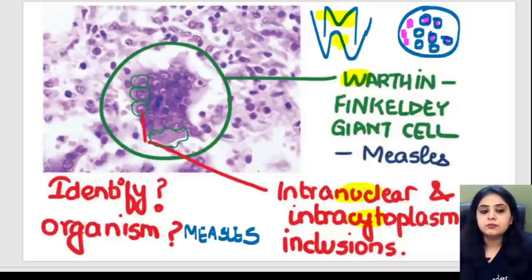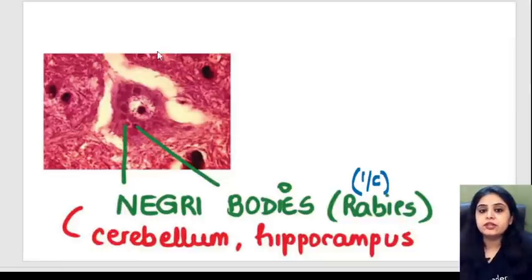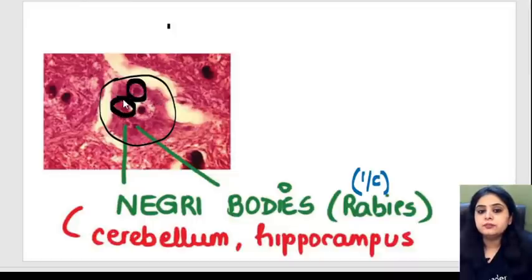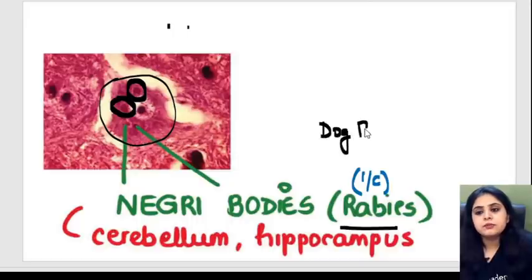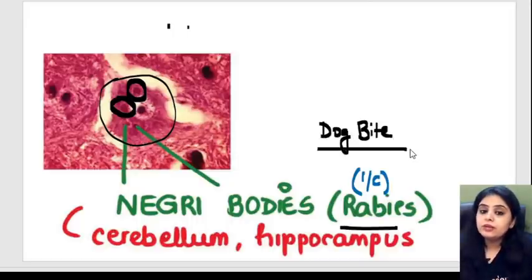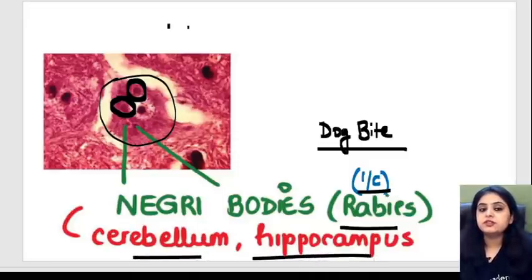Another very commonly asked set are the Negri bodies, which are intracytoplasmic bodies. In the image you can see a large cell, and within the cytoplasm are pink-colored bodies — those are the Negri bodies. They won't come as a spotter; history of a dog bite or animal bite will be given along with this image. Negri bodies are seen in the cerebellum and the hippocampus.